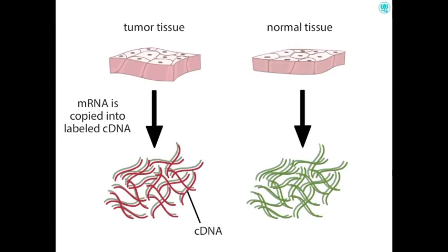For the tumor tissue, we have a red label, and for normal tissue, a blue label. In the example images, this will appear as green. The red and green labeled cDNA are mixed together and used for our microarray analysis.